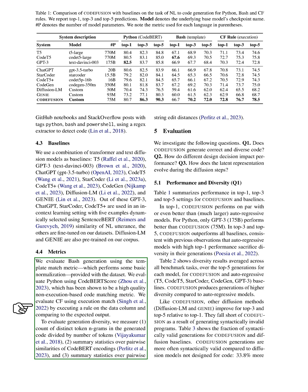To evaluate the diversity of the generated code, we measure the count of distinct token n-grams in the generated code divided by the number of tokens, summary statistics over pairwise similarities of encodings, and summary statistics over pairwise string edit distances.